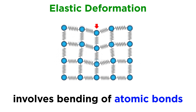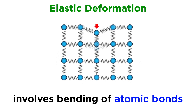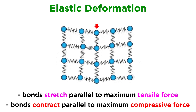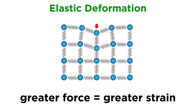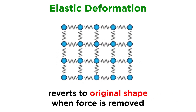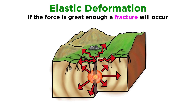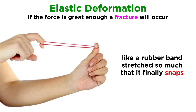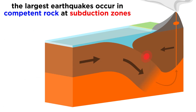Elastic deformation is the manifestation of the bending of atomic bonds that occurs when an object is stressed. When a force is exerted on an object, its atomic bonds stretch parallel to the maximum tensile force and contract parallel to the maximum compressive force. If the force is increased, the material experiences more strain, and once the force is removed, the material reverts back to its original shape when the atomic bonds relax. However, it is possible to exert a force so great that the rock fails and forms a fracture. When a rock fails under stress, all of the accumulated stress responsible for pulling the atoms apart is released, causing an earthquake. This is like how if you overstretch a rubber band — which deforms elastically — the released energy snaps the broken ends back toward your hand when it breaks. Therefore, we would expect the largest earthquakes to occur in the hardest and most competent rocks.